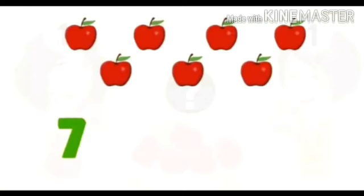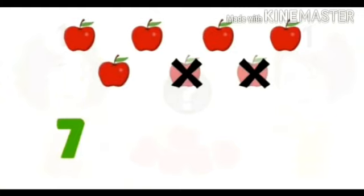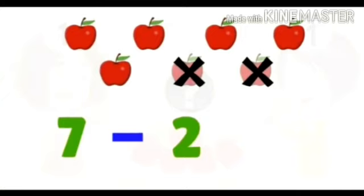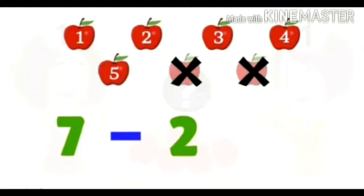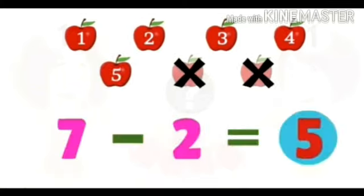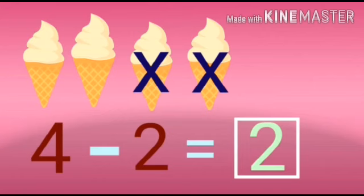Now another example: seven apples, take away two — how many left? Counting: 1, 2, 3, 4, 5 — five apples remain. So seven minus two is equal to five. Next example: there are four corn ice creams, two are taken away — so four minus two is equal to two.